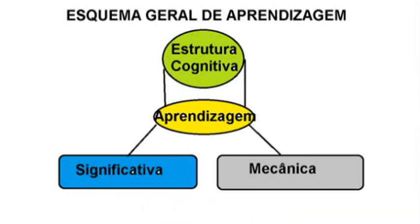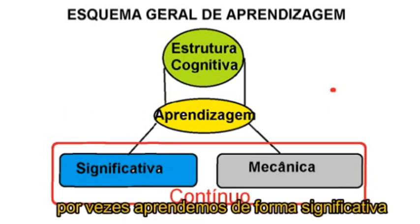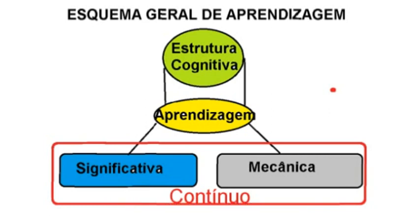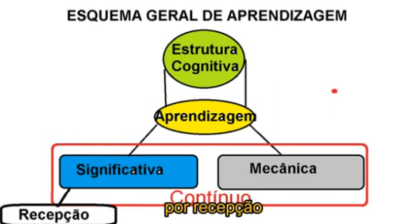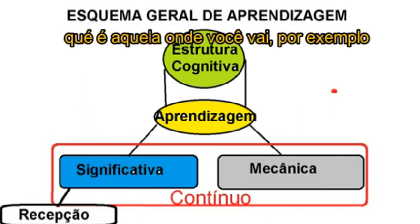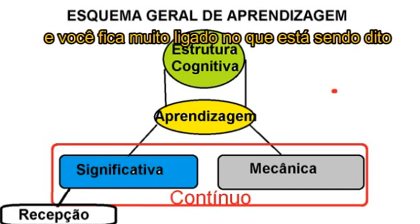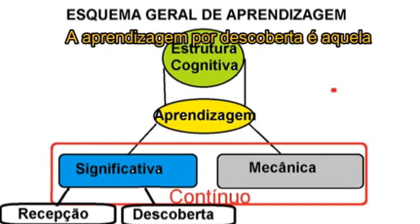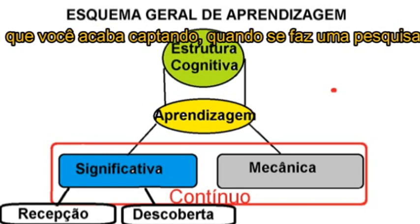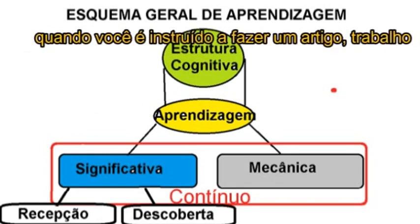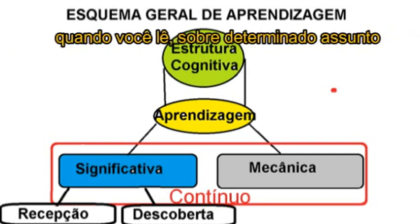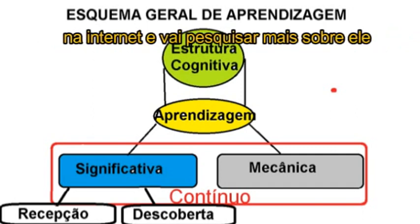É importante ressaltar que, para Ausubel, as duas eram fundamentais. Elas acontecem em um processo contínuo — às vezes a gente aprende de forma significativa e às vezes de forma mecânica. Dentro da aprendizagem significativa, podemos falar sobre aprendizagem por recepção, que é aquela onde você vai, por exemplo, a uma palestra com um assunto que te interessa muito e fica muito atento ao que está sendo proposto. Também temos a aprendizagem por descoberta, que é aquela que você capta ao fazer uma pesquisa, quando é instruído a fazer um artigo, um trabalho, ou quando lê determinado assunto e vai buscar mais informações sobre ele.